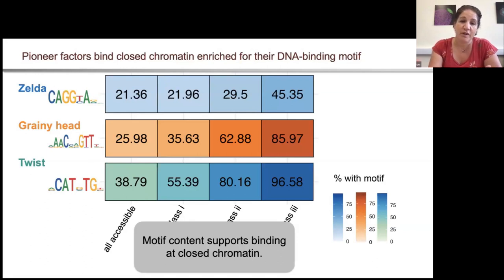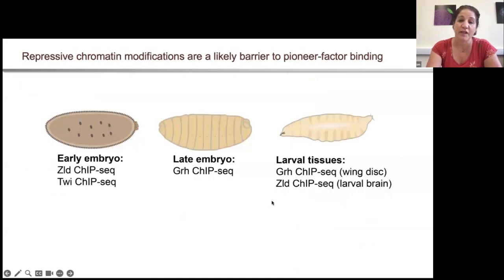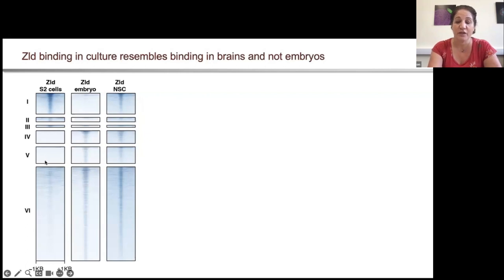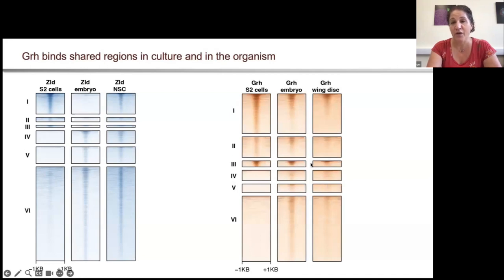With these exogenous expression data, we could go back and compare to our in vivo endogenous expression, where we had multiple data sets for these different factors in multiple tissue types. Looking at heat maps for Zelda showing these class 1, 2, and 3 regions, and comparing to Zelda binding in the embryo or in neural stem cells, we could see that binding in S2 cells looked very different from the embryo and quite different from neural stem cells — with large numbers of binding sites unique to the in vivo binding not replicated in S2 cells. We saw the same for Grainy Head, although with more similarities as expected for a protein binding many of the same regions through development.